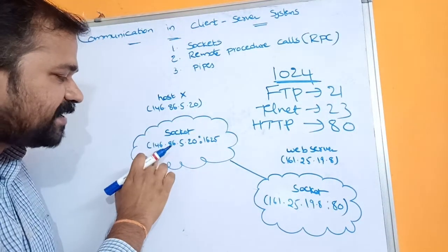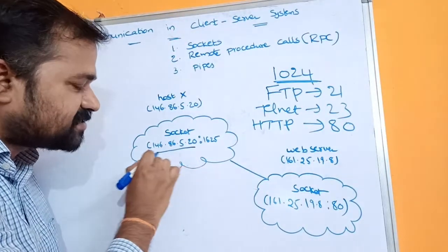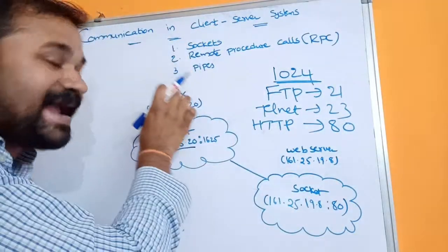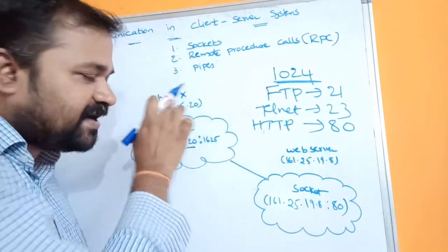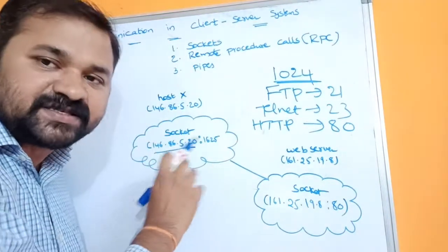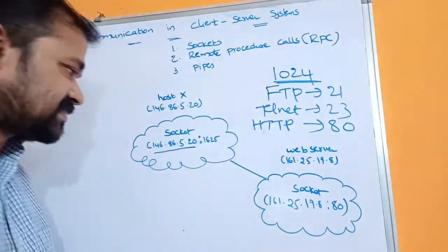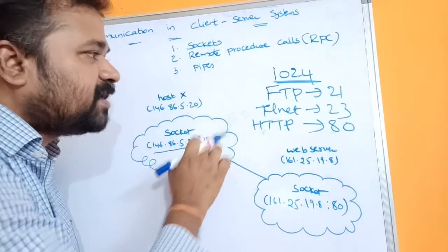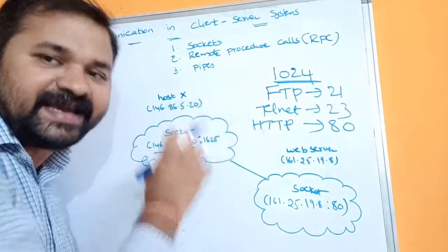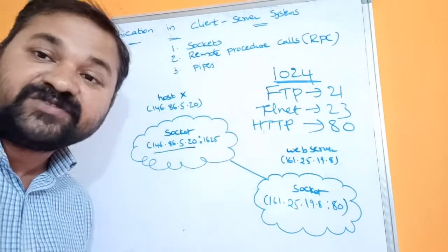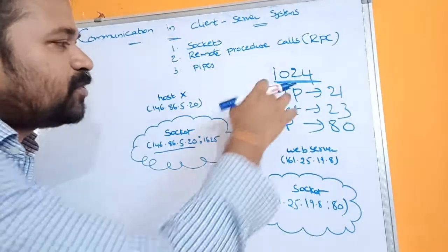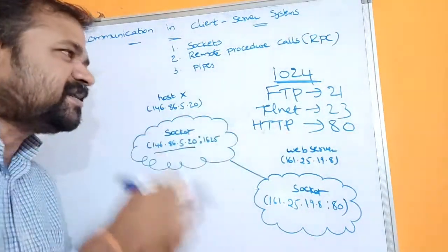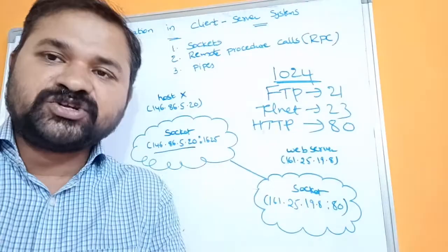The socket here is the IP address 146 combined with a port number, which is allocated by the client machine for the corresponding process or request. We have 1024 fixed port numbers, so a port number greater than 1024 will be allocated — it may be any number, but it must be greater than 1024.